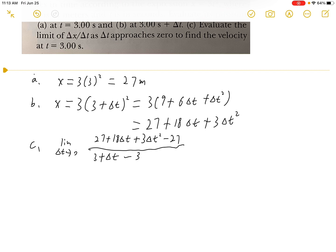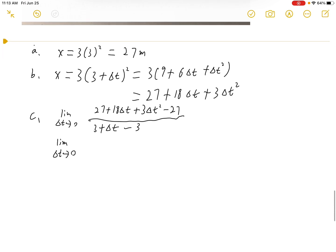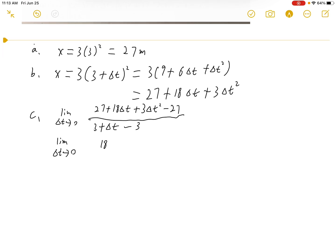And simplify this, we will have limit as Δt approaching zero. 27 minus 27 will get zero. So we have 18Δt plus 3Δt squared over Δt.